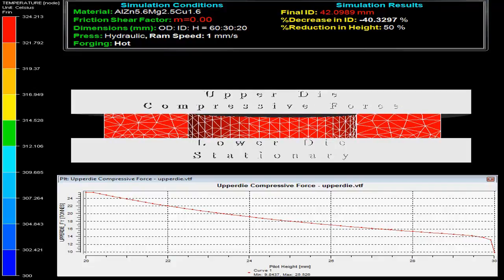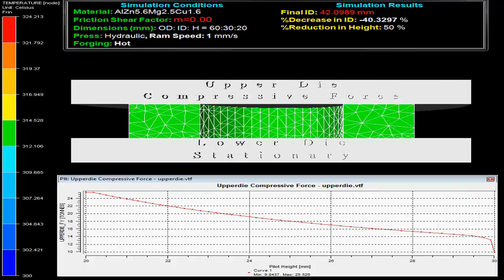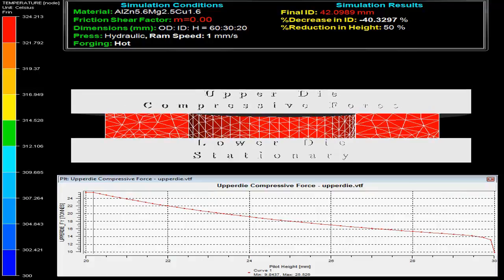The graph between force on upper die versus pilot height is shown. The temperature evolved during the process can be compared with the help of the scale given on the left side.